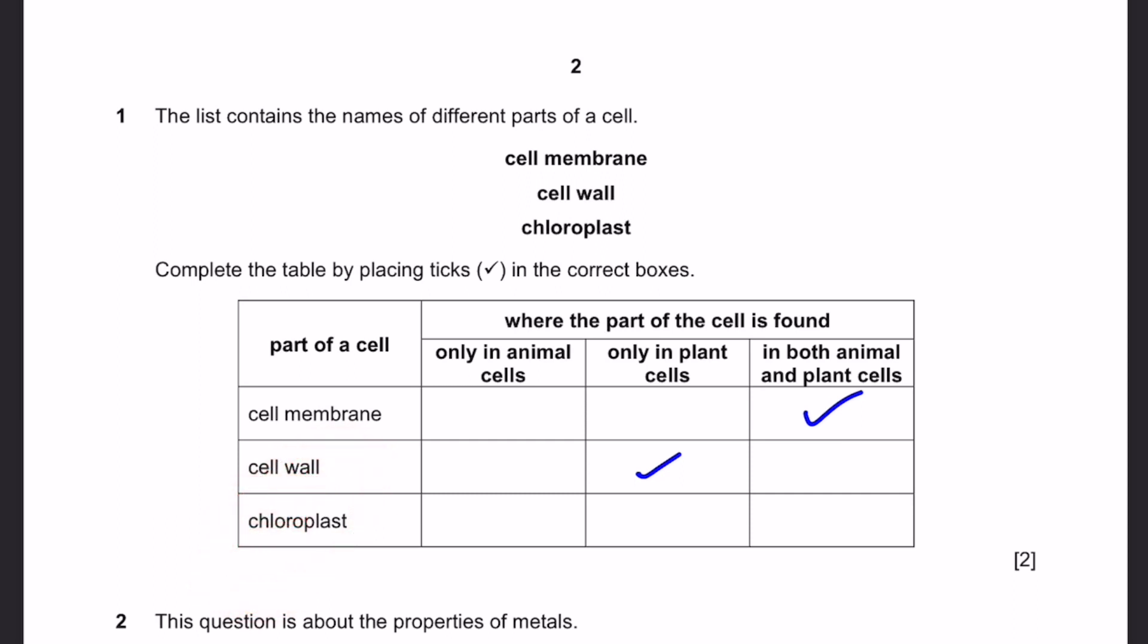Chloroplast. First of all, what is a chloroplast? It is a substance in plant cells which gives their green pigment, which contains chlorophyll and helps with photosynthesis. Animals don't do photosynthesis and they don't need a green pigment. So it's only plant cells.